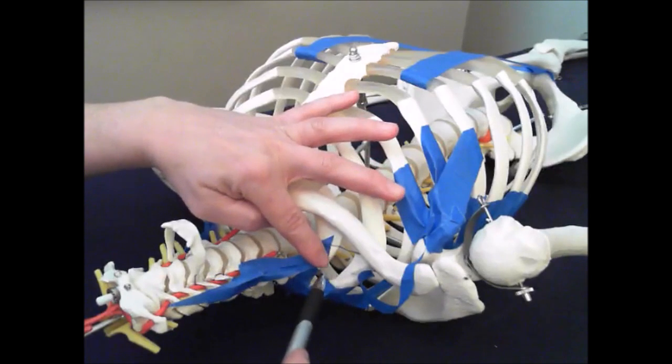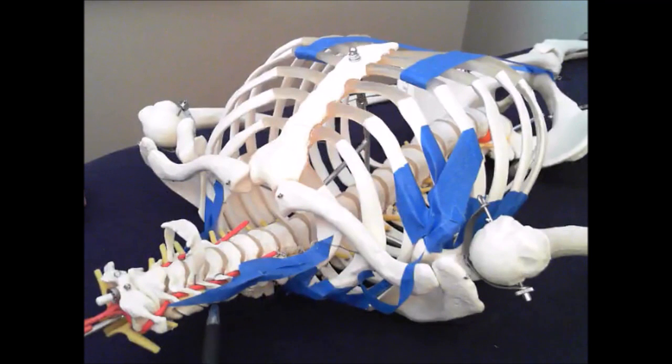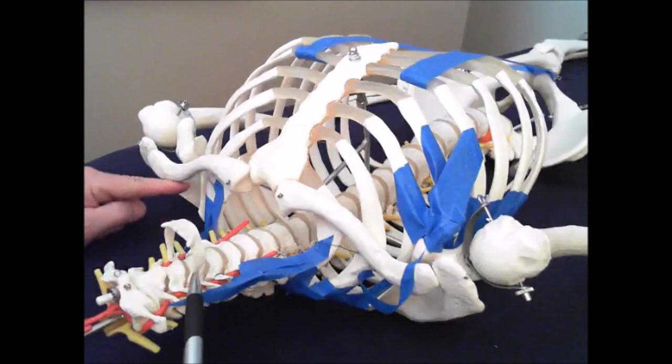So when there's a lot of dynamic force coming up from the scapula through the serratus anterior, you can see how pressure and force is going to travel up the neck and then cross over to the other side.